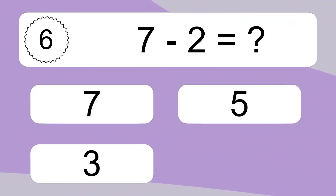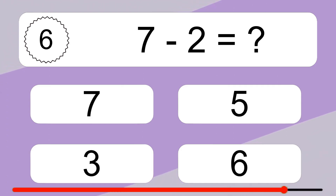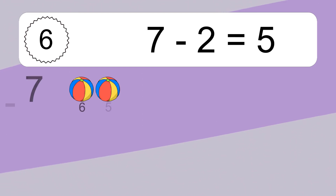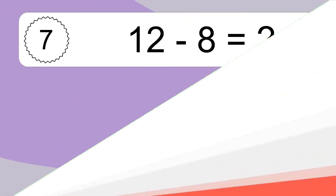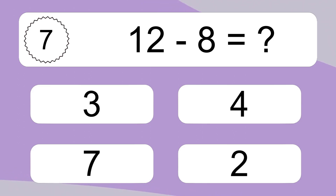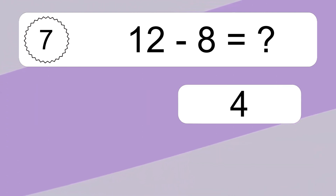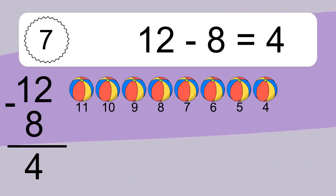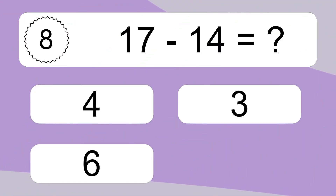10 minus 5 equals 5. Let's count it. 6, 5. 12 minus 8 equals what? 12 minus 8 equals 4. Let's count it. 11, 10, 9, 8, 7, 6, 5, 4.